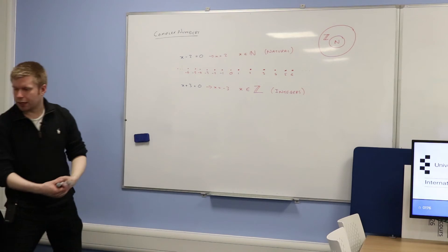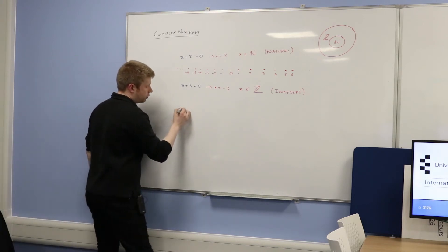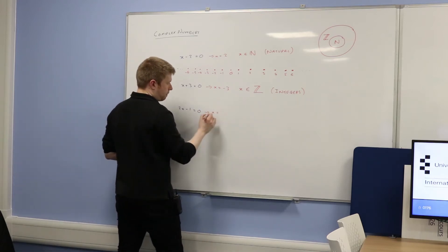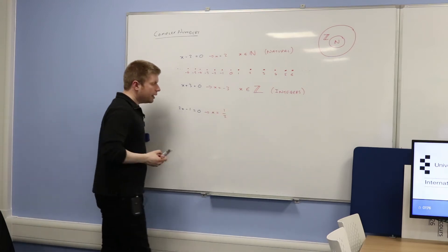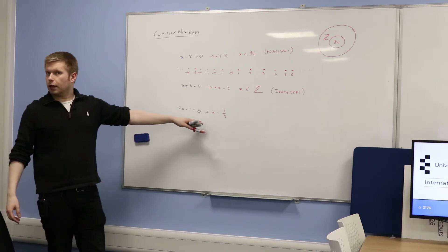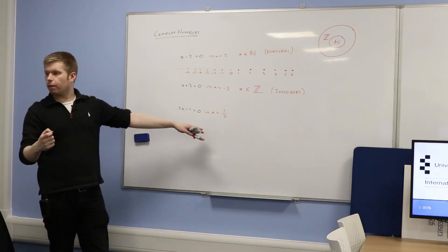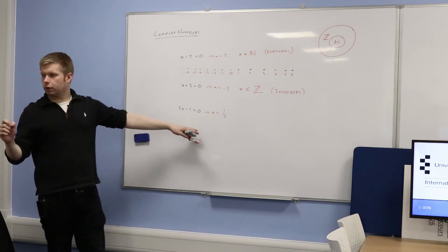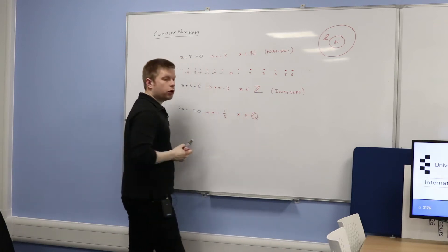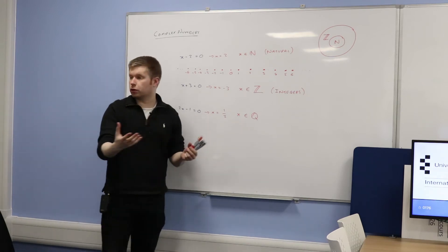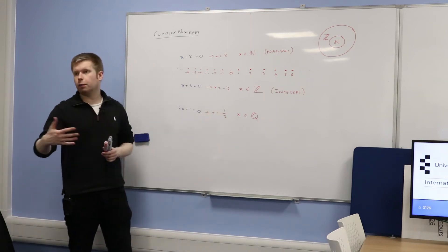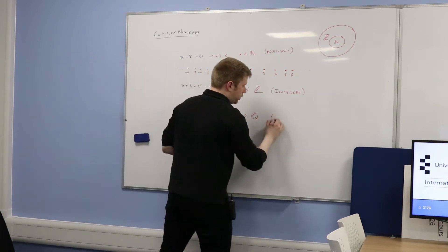So let's look at other types of equations. What about 2x minus 1 equals 0? The solution is x equals a half. Now clearly, this is not a natural number and not an integer. We call it a rational number — we write it with a Q. The Q stands for quotient, which is something you get when you divide two numbers by each other. For example, 4 divided by 1 gives a quotient of 4.